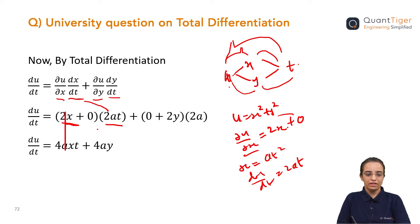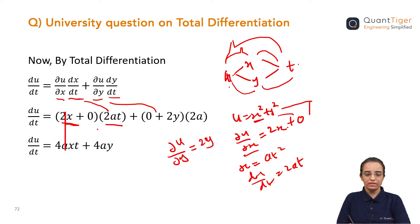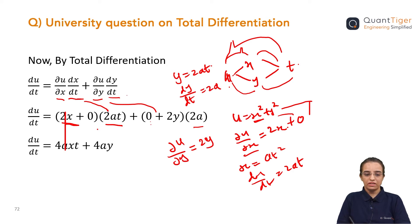Similarly, del u by del y: differentiating u partially with respect to y, the x squared term's derivative becomes 0, and y squared becomes 2y. And dy by dt: since y is equal to 2at, differentiating with respect to t gives dy by dt equal to 2a. So this is the value of dy by dt, which I have kept as 2a.